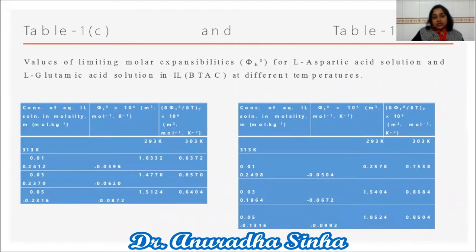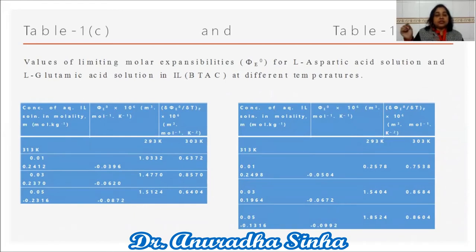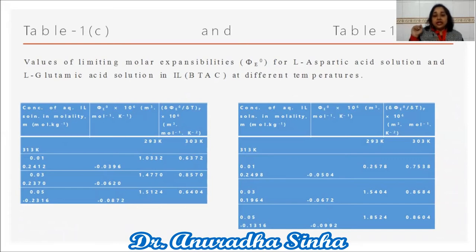From tables 1C and 1D, the values of the limiting molar expansivity for L-aspartic acid and L-glutamic acid in the ionic liquid solutions at different temperatures show that generally positive or small negative values indicate strong solute structure-making rather than structure-breaking interaction. This confirms that the mode of solute-solvent interaction is structure-making. This effect is strongest in 0.05 M aqueous ionic liquid at 313 K for both amino acids, with the effect being greater in L-glutamic acid solutions.